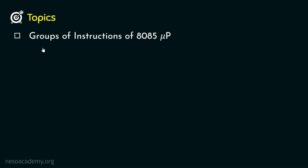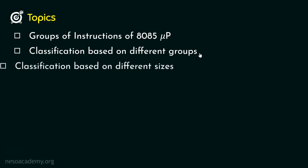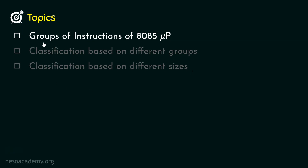The topics we are going to cover in this session: first, we are going to learn about the different groups of instructions of the 8085 microprocessor. Thereafter we will learn about the classification based on the different groups, and finally the classification based on different sizes — basically the different instructions and their classifications.